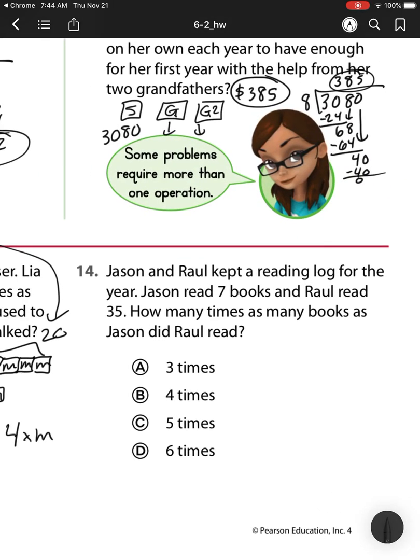For number 14, Jason and Raul kept a reading log for the year. Jason read 7 books. So I'm going to show Jason as 7, and Raul read 35. So that would be, oops, I'm getting ahead of myself. How many times books did Jason, how many times as many books did Jason read? How many times, that's a hard sentence for me to present it. How many times as many books as Jason did Raul read?